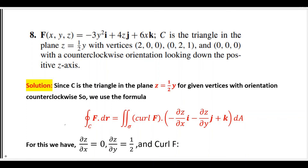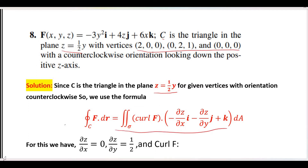Question number 8: you have a vector field given, and C is the triangle in the z equals 1 over 2y plane. The vertices are given and the direction is counterclockwise. We have z given by formula, counterclockwise orientation.